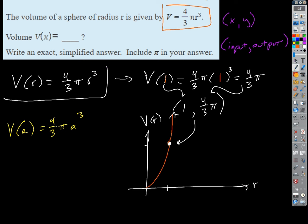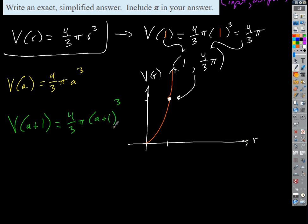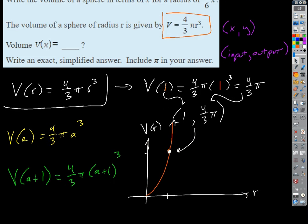What would V of (A+1) look like? 4/3 π times the quantity (A+1) cubed. That's not simplified. If I wanted to simplify that, I could cube out the (A+1) and then distribute the 4/3 π and get a string of terms. But in this case they're asking us to evaluate the volume when R is 5/6 x.